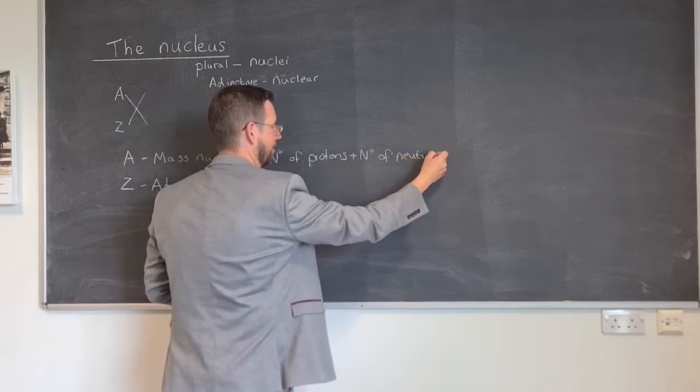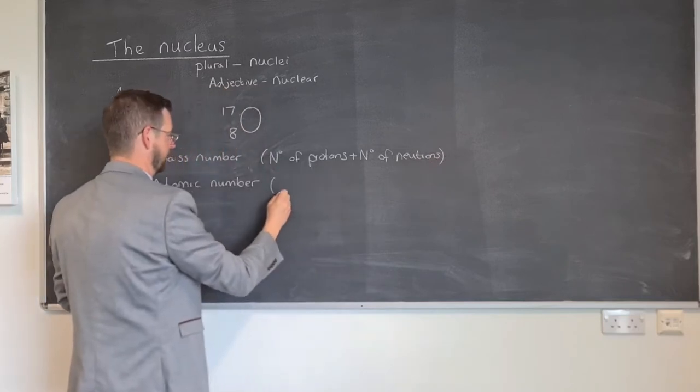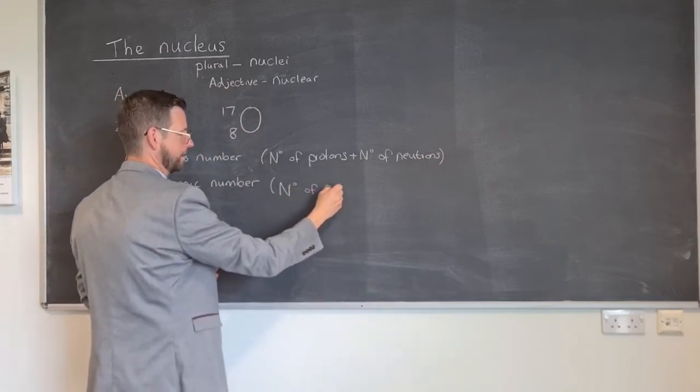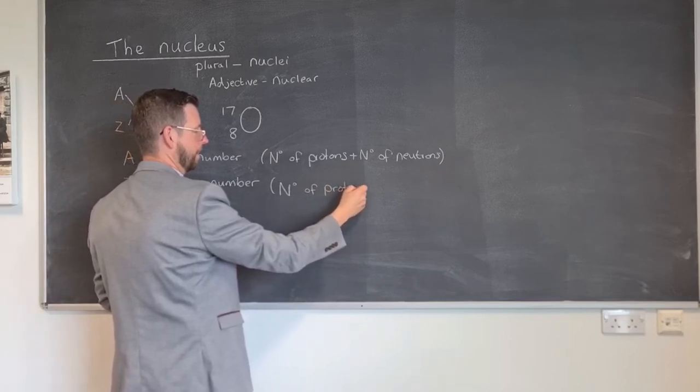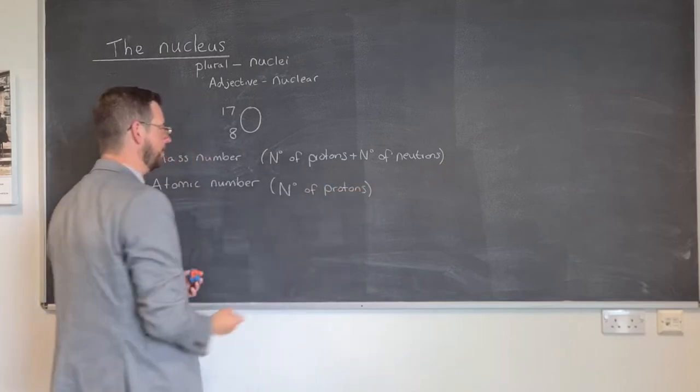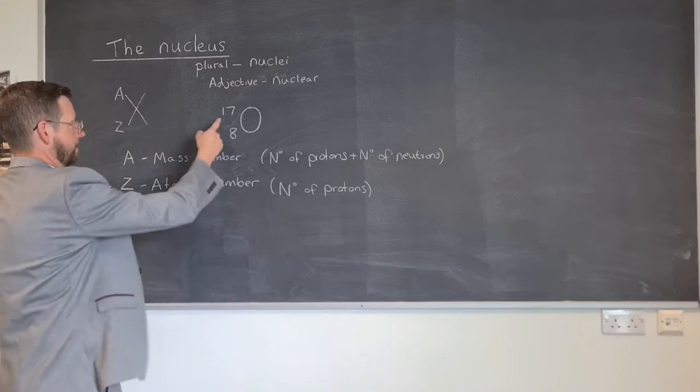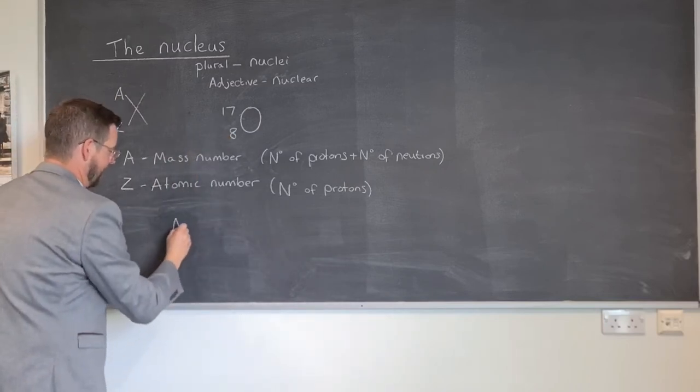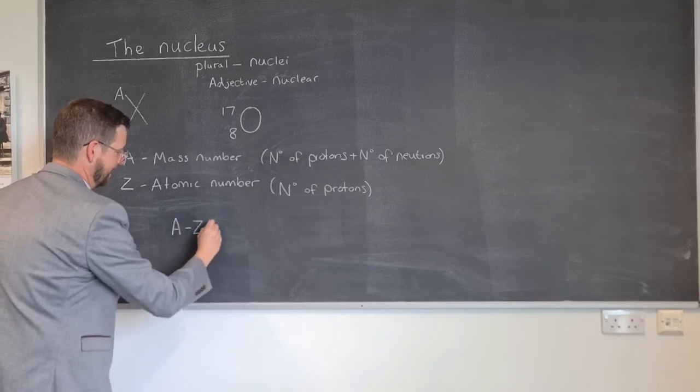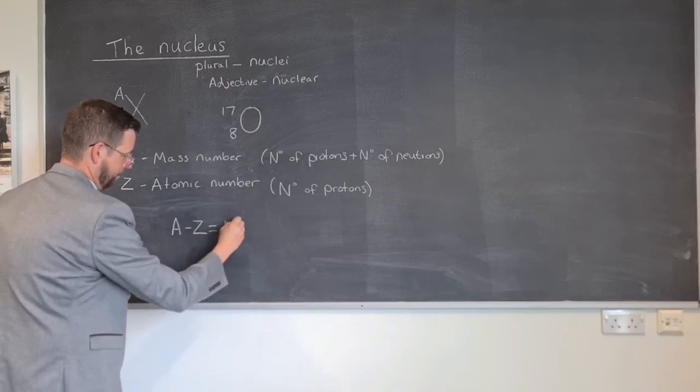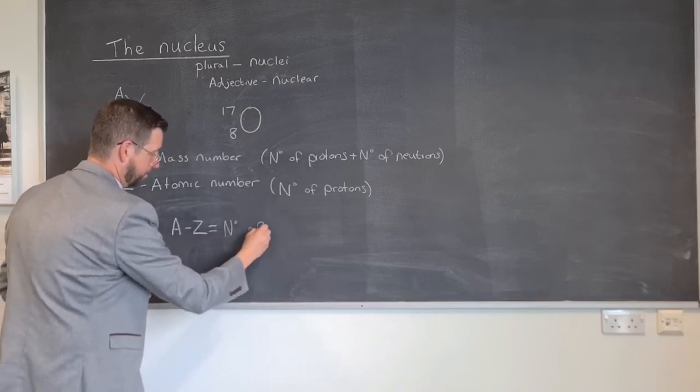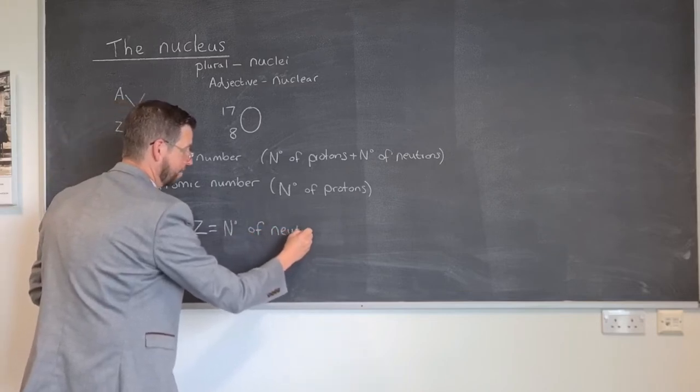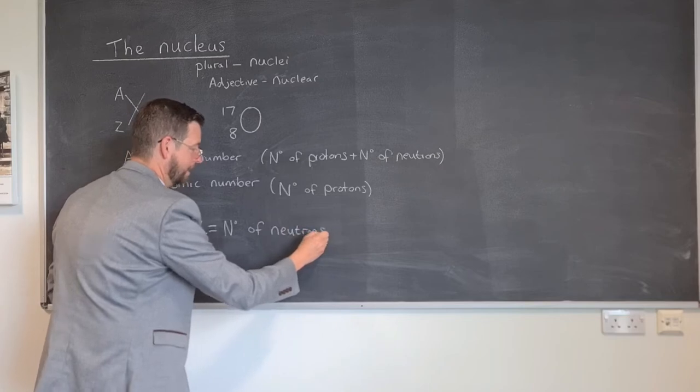It tells you the total mass of the nucleus whereas the atomic number is just the number of protons. If this is the number of protons and this is just the number of protons, then A minus Z will give us just the number of neutrons, and it will help us to identify which isotope of this element we are dealing with.